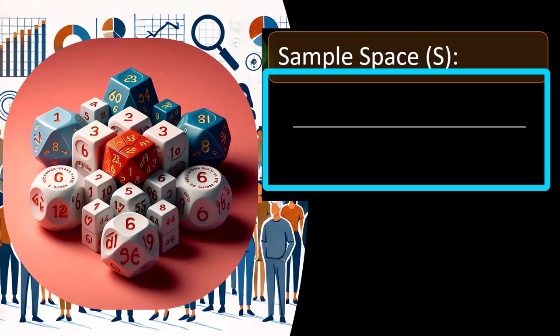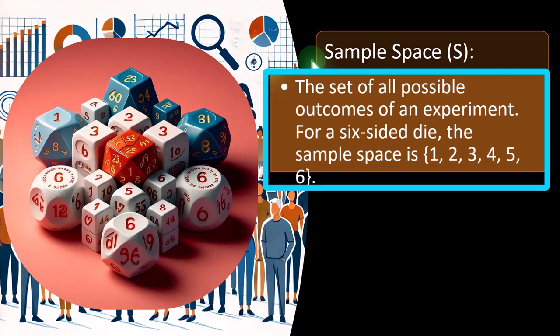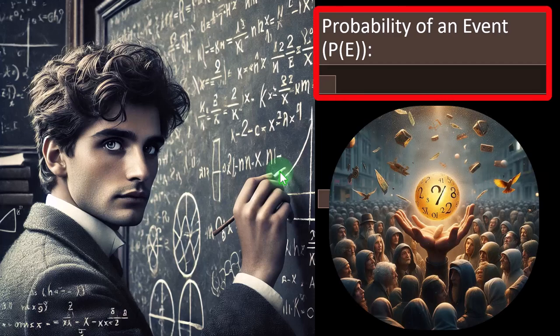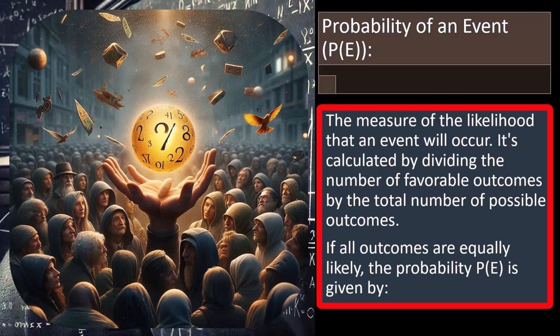Sample space — sometimes represented with an S — is the set of all possible outcomes of an experiment. For a six-sided die, the sample space is the numbers one through six. An event is a subset of the sample space and can consist of one or more outcomes. For example, if we roll a die and we're looking for a four, that's one outcome as the event. Or the event could be rolling even numbers — two, four, or six. The probability of an event, P(E), is the measure of the likelihood that an event will occur, calculated by dividing the number of favorable outcomes by the total number of possible outcomes.